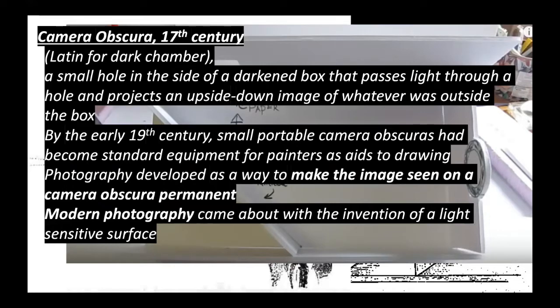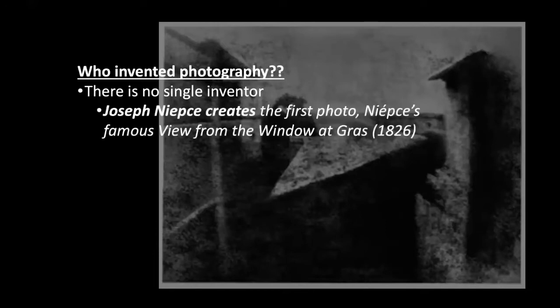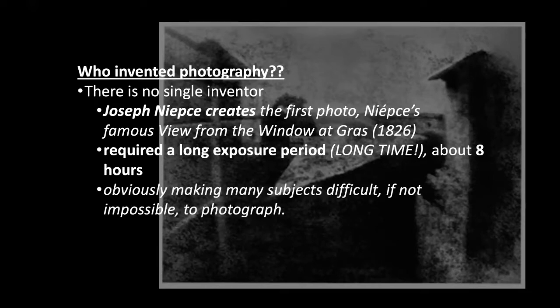Modern photography came about with the invention of a light-sensitive surface that an image could be projected onto. This is actually the first photograph. It's created by Joseph Niépce. It took eight hours for this image to be exposed. Exposed means the amount of light coming onto this piece of metal — because at this time they're exposing images onto metal, not paper.